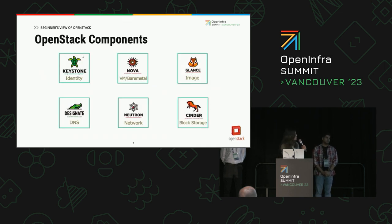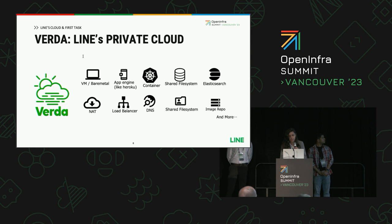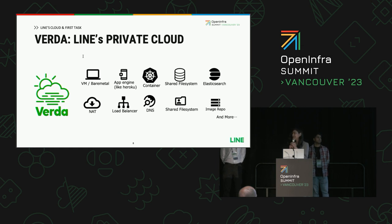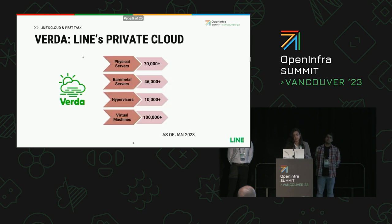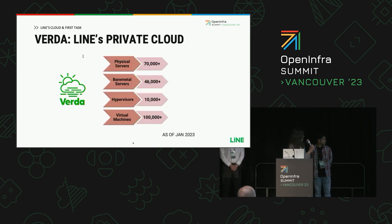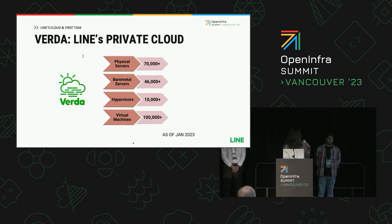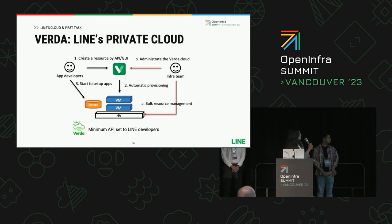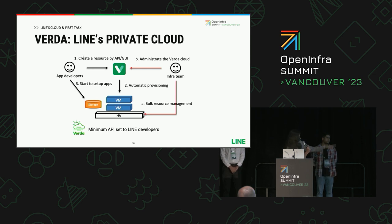These are a few of the major OpenStack components that we also work on. So what is Verda? Verda is the name of LINE's private cloud. LINE is basically where me and Bharadwaj work, and we work in the cloud team, which is the Verda team. Verda provides managed services. To give you a rough overview of the scale of Verda, these are the number of physical servers, bare metal servers, hypervisors, and virtual machines at Verda as of January 2023. Our end users are basically LINE developers, and we are there at the infra team.